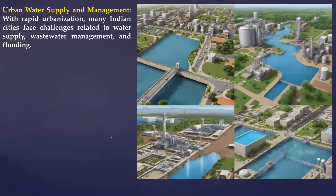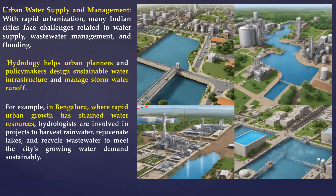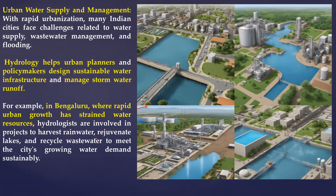Urban water supply is also a key scope. Looking at Bengaluru's current condition — rapid urbanization has caused water supply problems. Hydrologists have a role to play: urban planners with hydrological information would manage stormwater runoff and other challenges better. In Bengaluru, where rapid urban growth has strained water resources, hydrologists are involved in projects on water harvesting, water recycling, and several other measures.